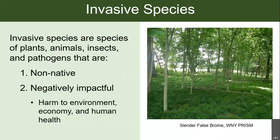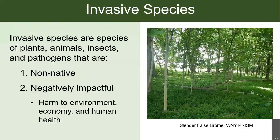To make sure we're all on the same page: we define invasive species as plants, animals, insects, and pathogens that are, one, not native — they come from somewhere else — and two, negatively impactful, causing some sort of harm to the environment, the economy, or human health. In the picture on the right I have slender false brome — you can see it's just covered the entire understory, out-competing all the native plants, and these infestations can prevent new trees from growing and harm native communities.